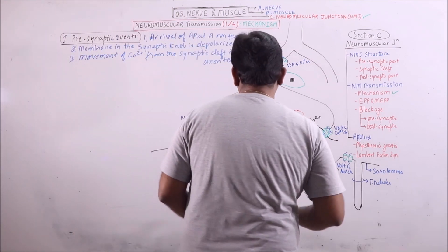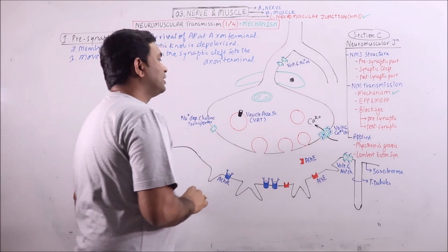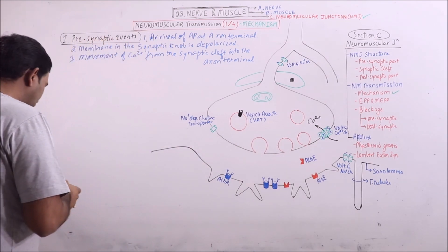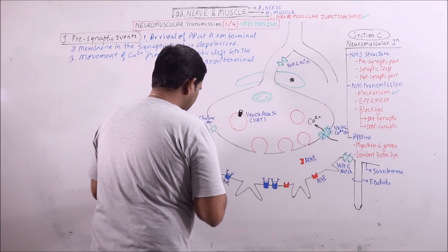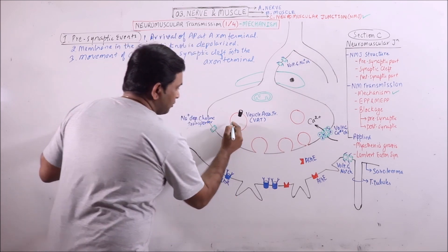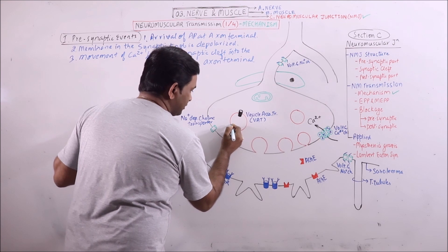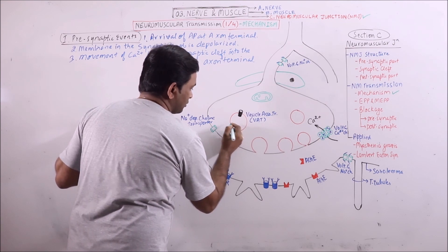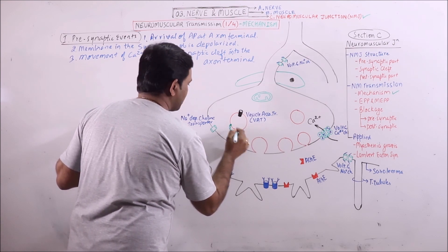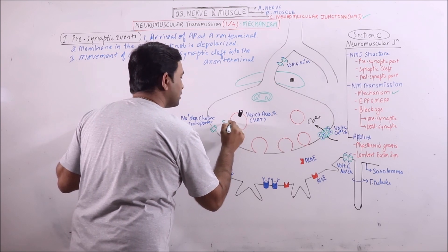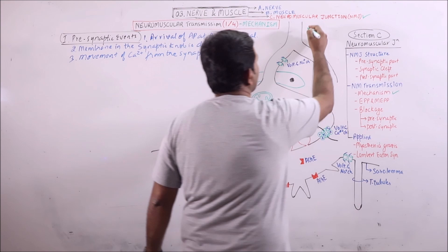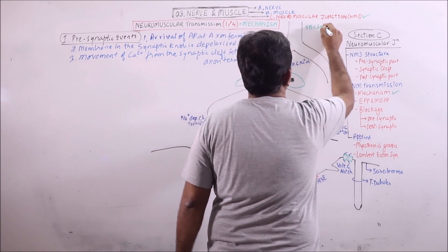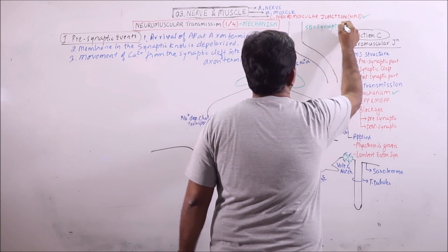Now calcium has entered. There will be calcium mediated release of neurotransmitters. How this happens? There are some membrane proteins in the vesicle known as synaptobrevin.